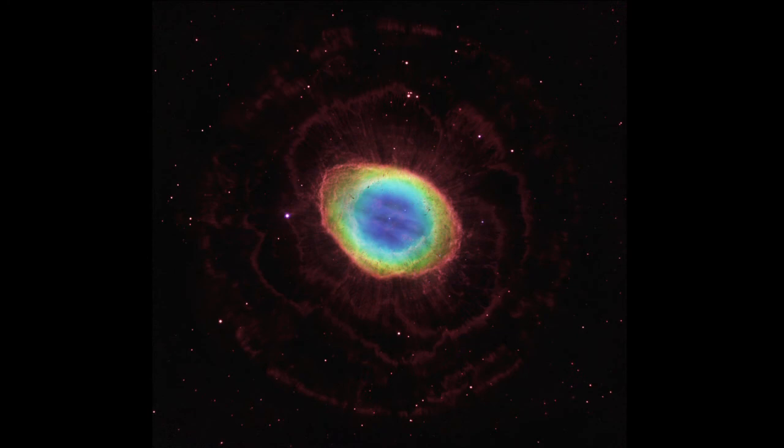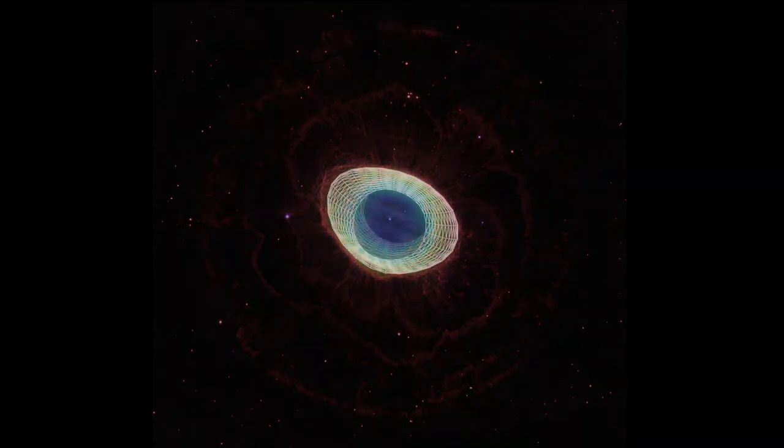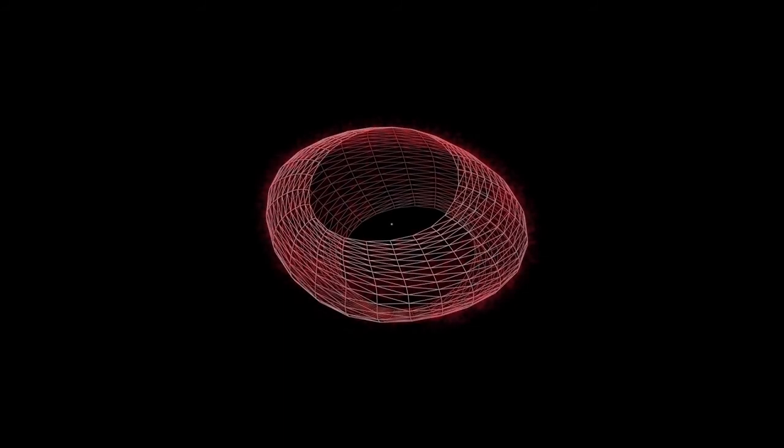The nebula turns out to have a much more complex shape than we can see from Earth. The main structure of the nebula is a broad ring of nitrogen. That's the red ring you see.